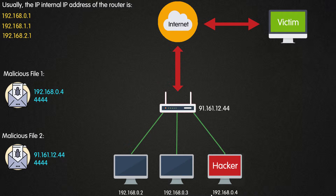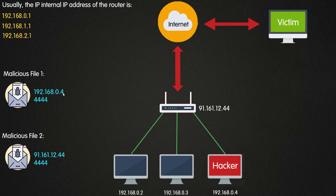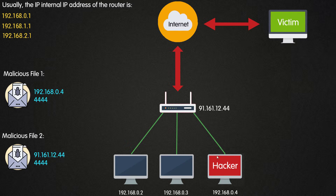However, if we send malicious file number one to the victim in the USA, the backdoor will try to connect to 192.168.0.4, which is a private IP address not exposed to the internet. Because this IP address is not in the same network, the hacker would not get the reverse connection — they are in a completely different network and country, sharing a different public IP address.